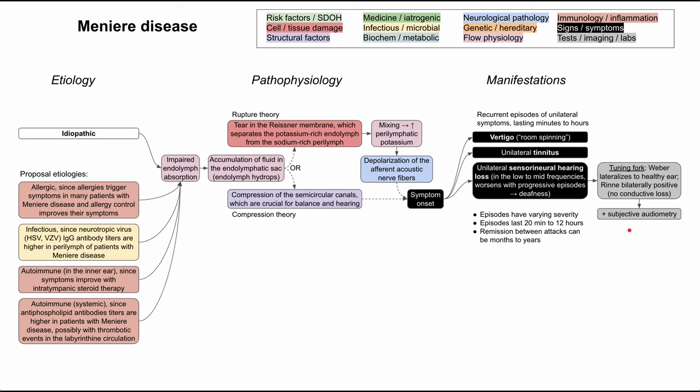Patients typically have episodes of varying severity. Episodes can last from 20 minutes to 12 hours, so it could be an all-day experience. Patients will have remission between attacks — they won't have constant symptoms — and this remission can vary from months to years. It tends to be a progressive illness, and in some cases it spreads from unilateral to bilateral involvement in about 10 to 20 percent of patients, and can ultimately lead to deafness.